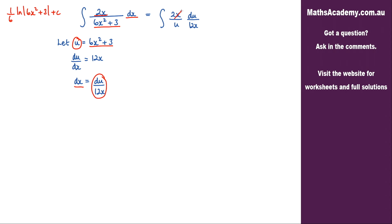The x's will cancel. I've got 2 over 12, that's 1 over 6, and I can bring that 1 over 6 outside of the integral.